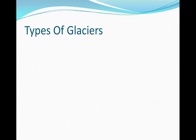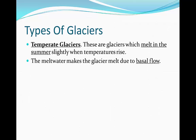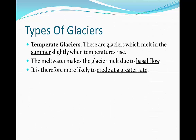There are two types of glaciers. The first is a temperate glacier. These are glaciers which melt in the summer due to higher temperatures. The melt water makes the glacier move via basal flow — we'll be looking at the types of flow later. Basal flow is the flow of a glacier down the valley because of the melt water underneath the glacier, which makes it slip. It is therefore more likely to erode at a greater rate because of the melt water that it possesses.